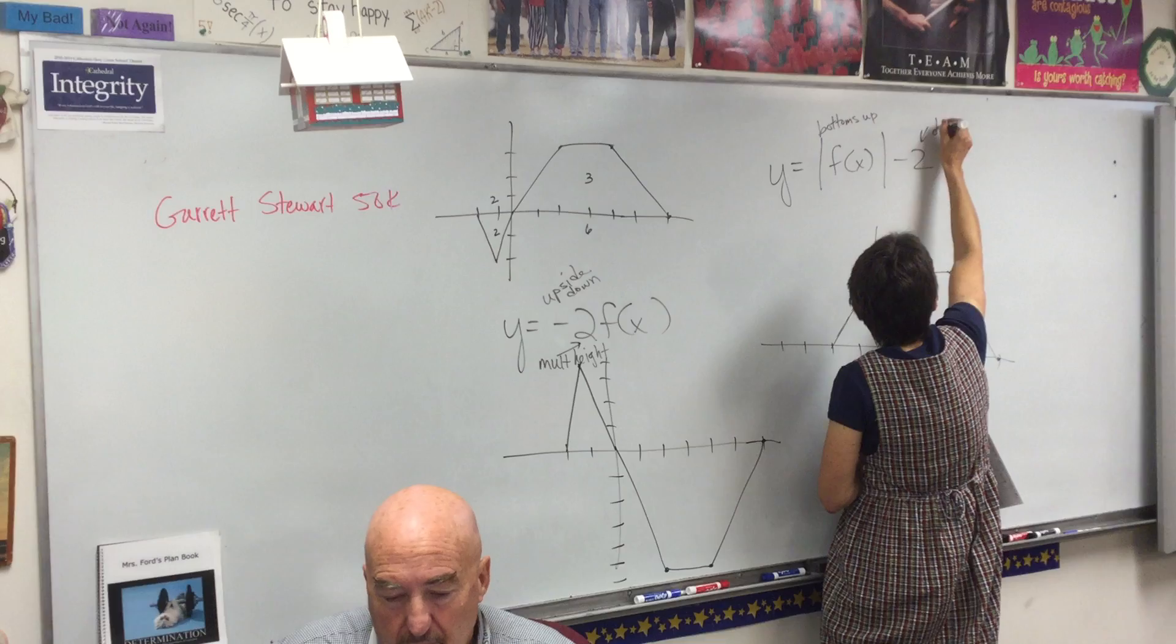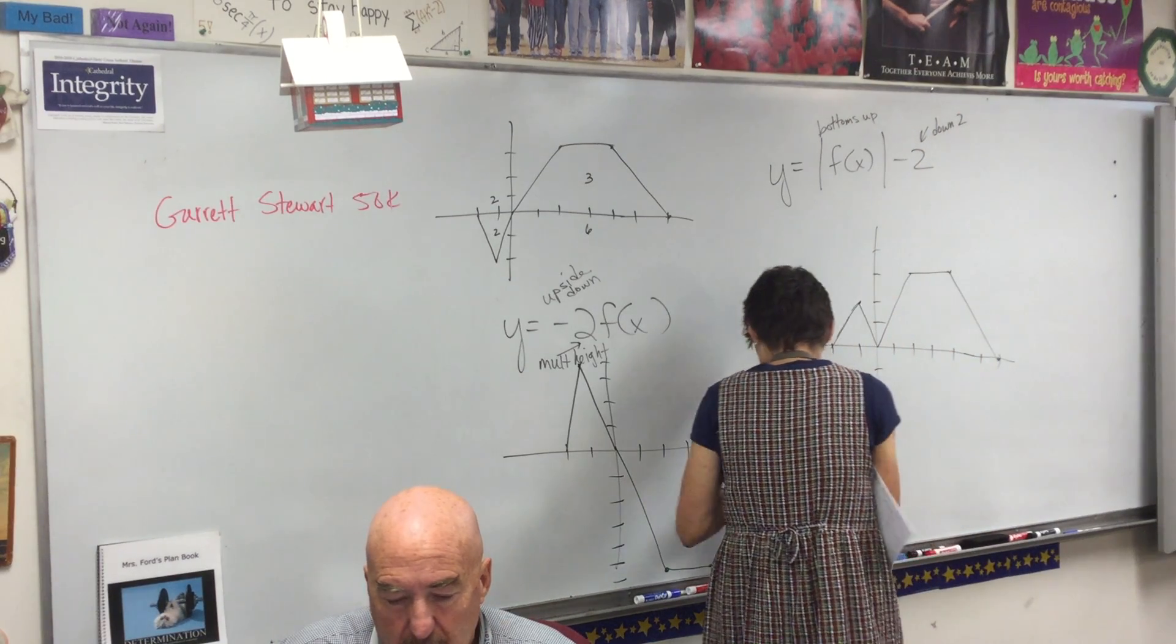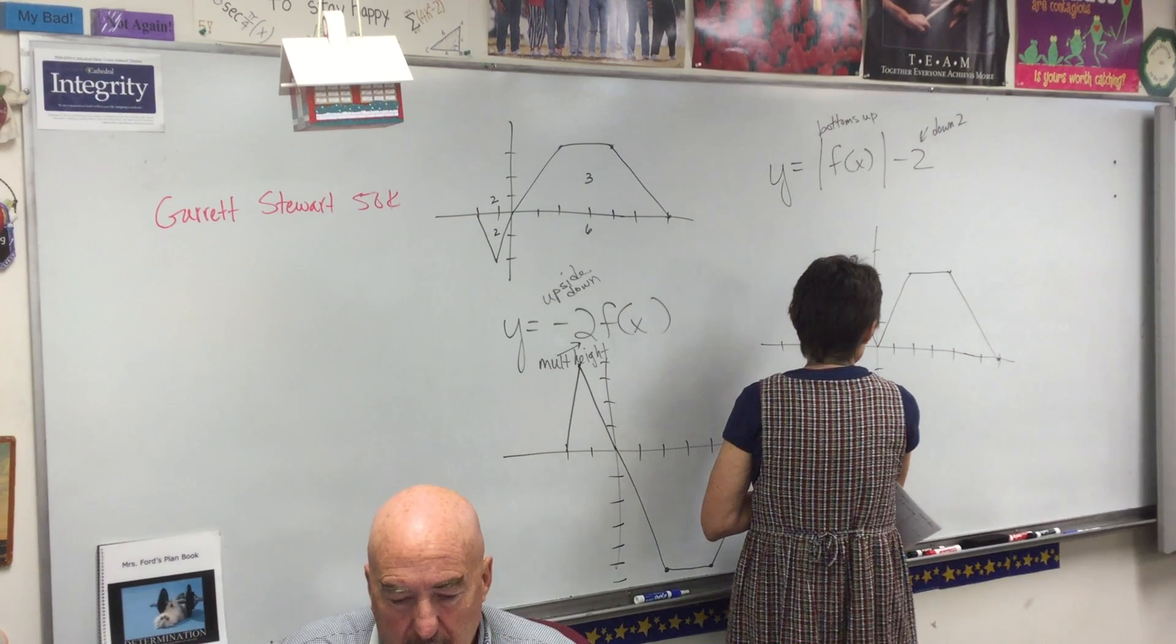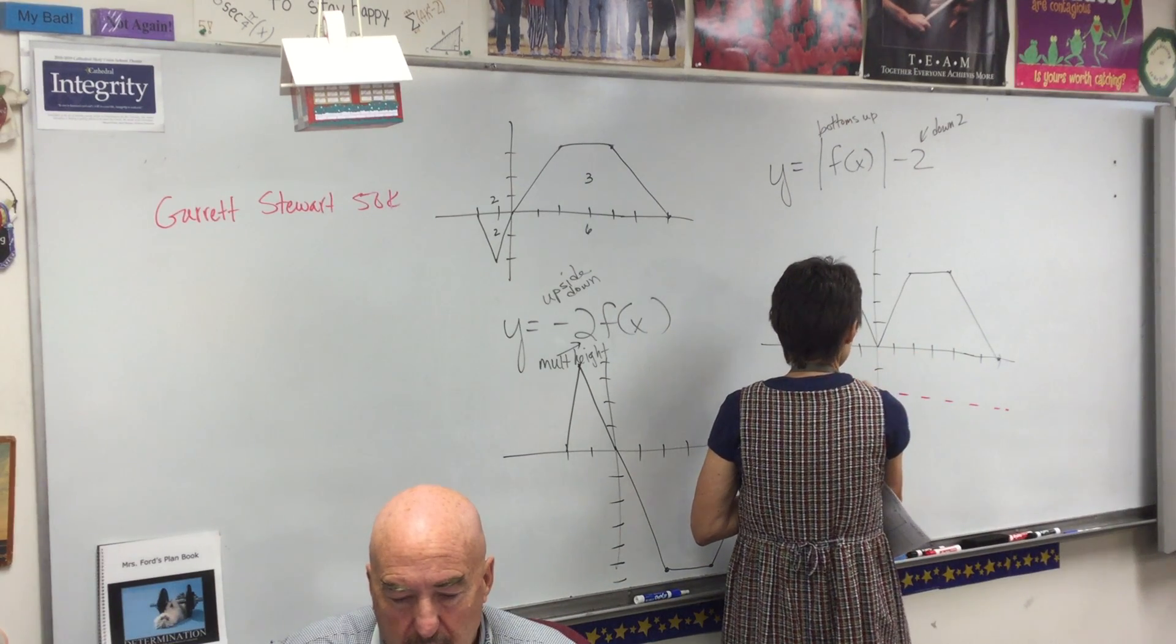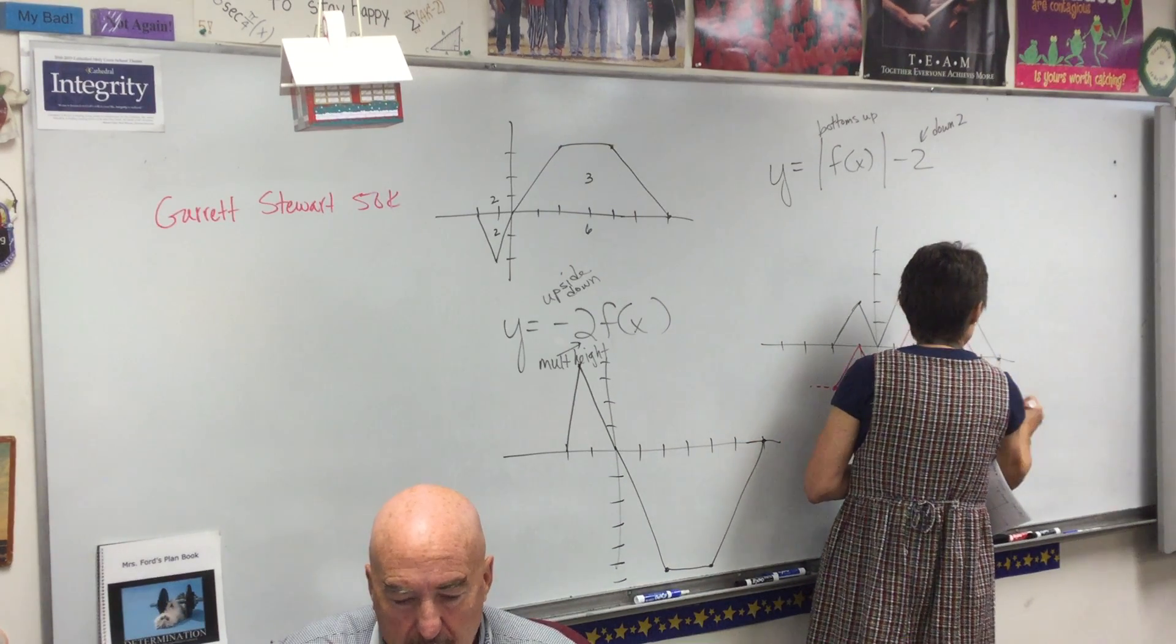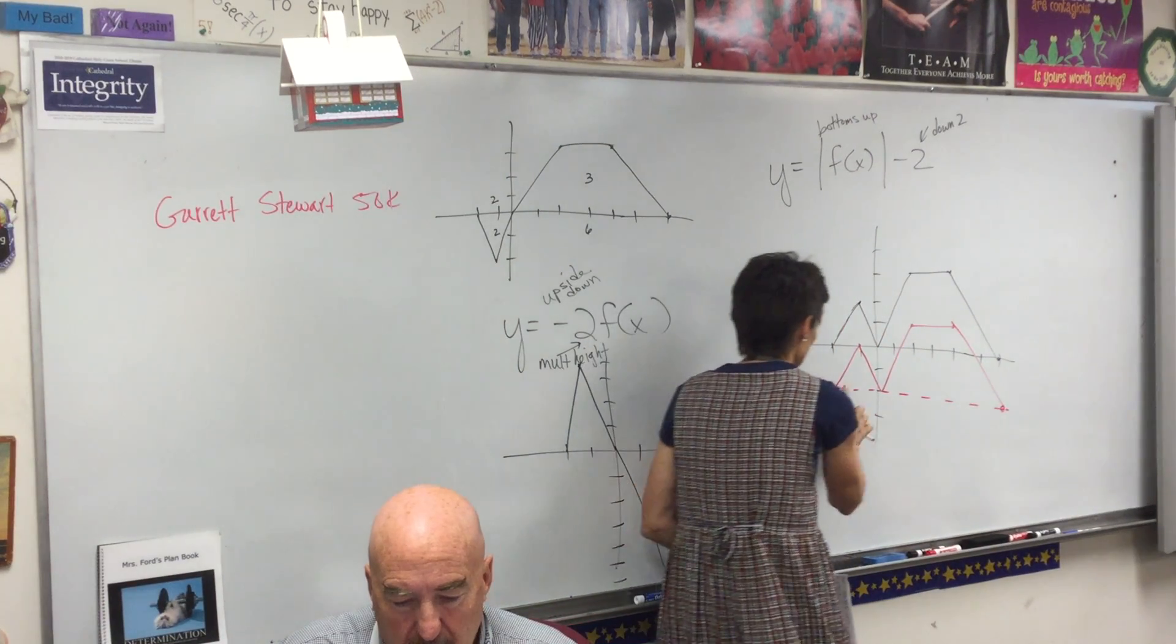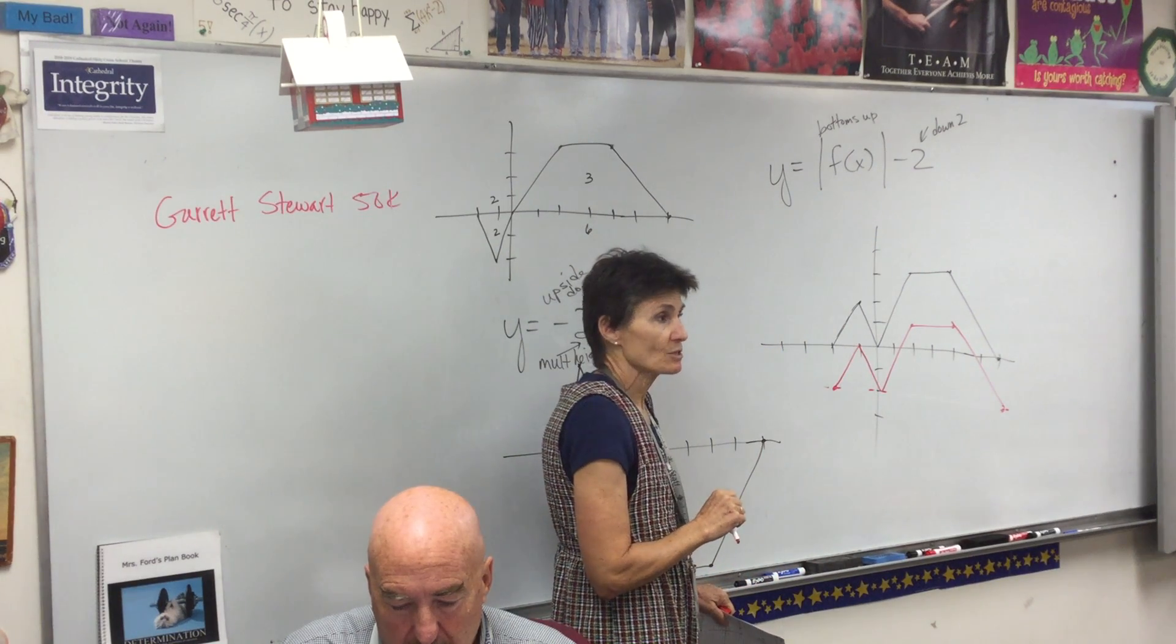Now what does this do? Down two. So I'm going to take my picture here, and I'm going to literally drop it down two. So instead of sitting on the axis, I'm going to have this exact same picture, but it's sitting down two. There it is. That red thing is the answer. You don't need this line. You can put it in if it helps you, but that would be the answer.